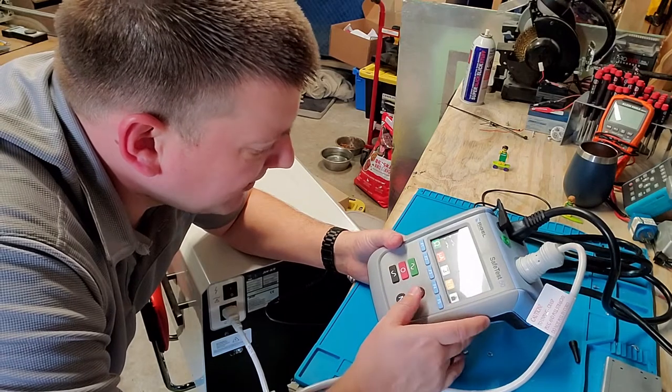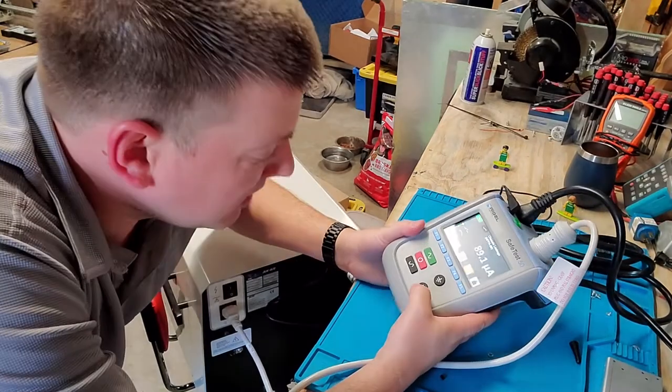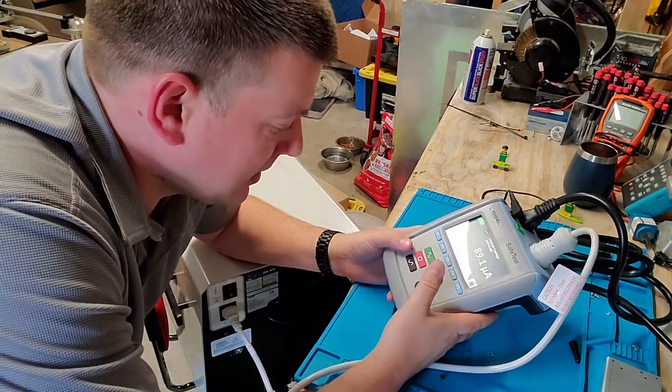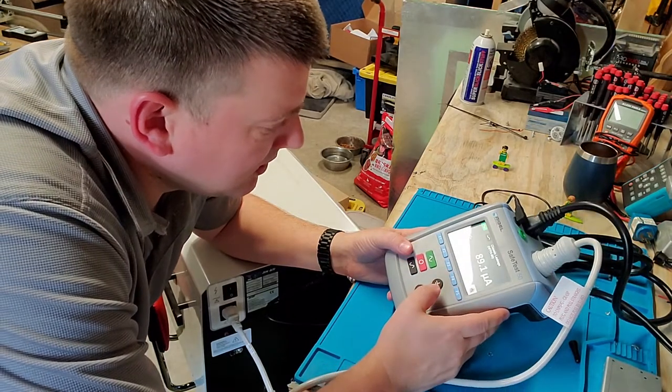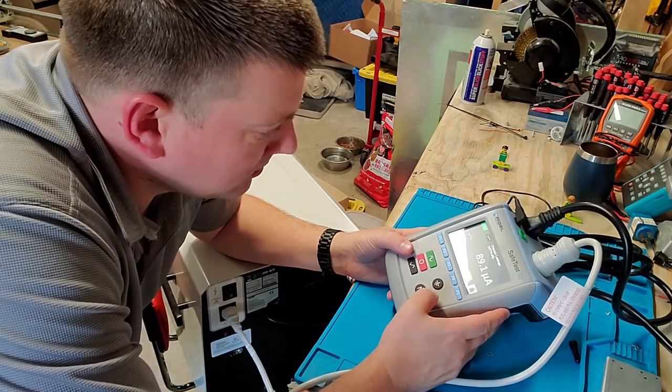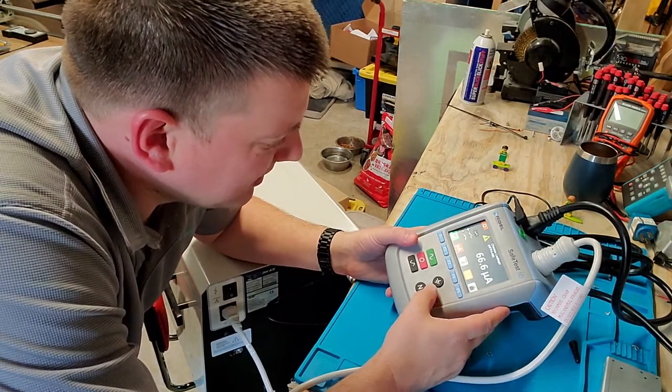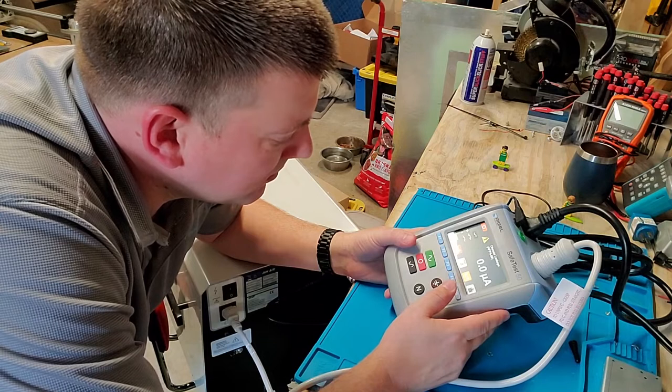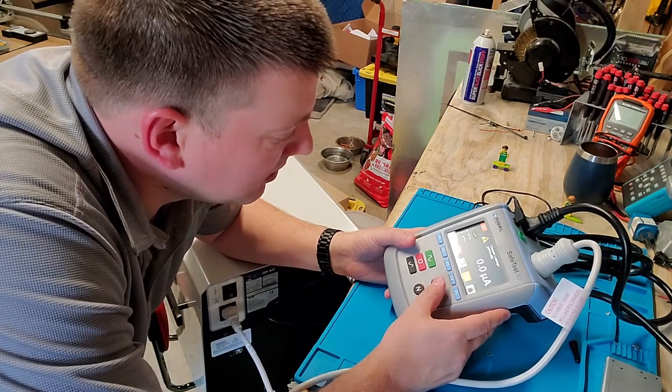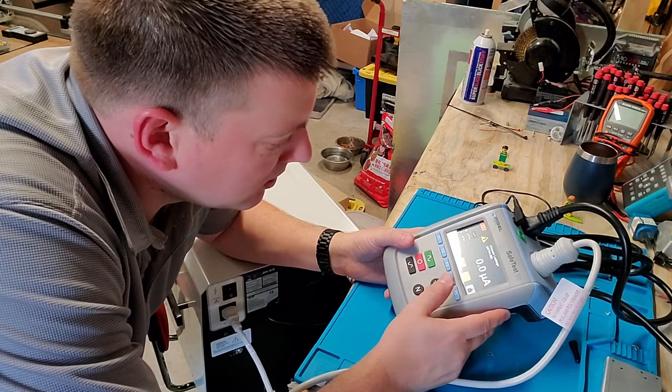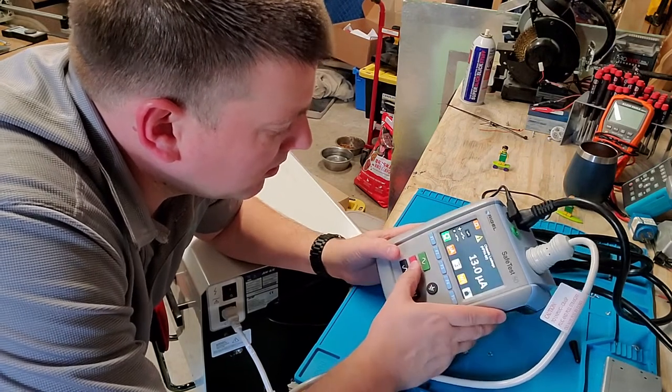This one here would probably get 88.8 written on the work order, no problem there. I tested that. Now here in the United States we don't have to do the open neutral and we don't have to do the reverse polarity. We can do it if we want. I hit reverse polarity. Here we go, we're going to open the ground. Actually close the ground, that was opened.